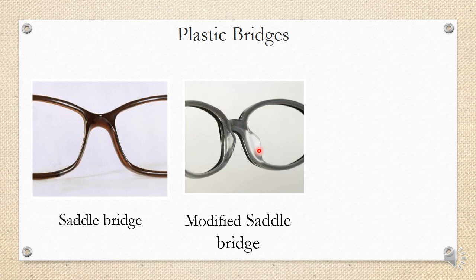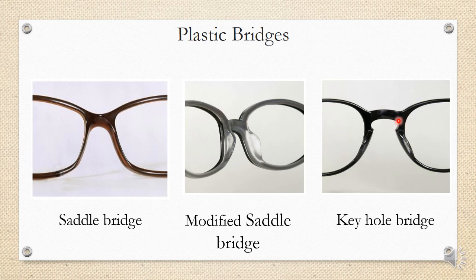In the modified saddle bridge, unlike the normal saddle bridge, there is extra area extending toward the patient's face. The third plastic bridge type is the keyhole bridge, which has a keyhole appearance. This design creates space for air to flow in and out, reducing perspiration and fogging on the nasal sides. In the keyhole bridge, the crest is not in contact with the bridge — the full weight rests on both sides of the nose.